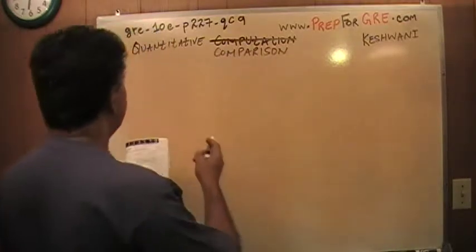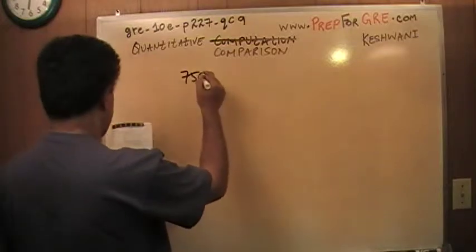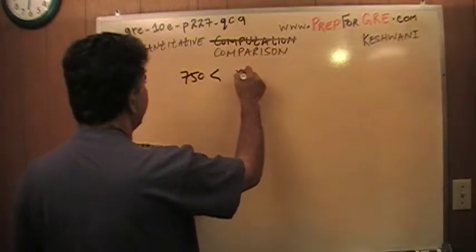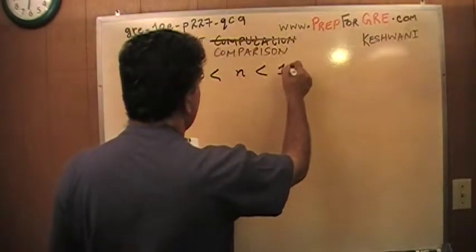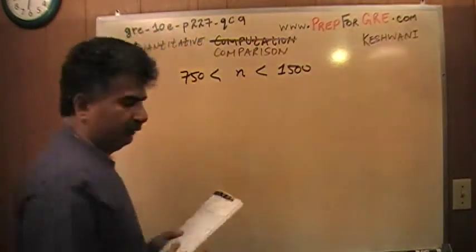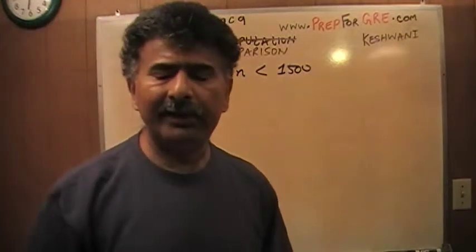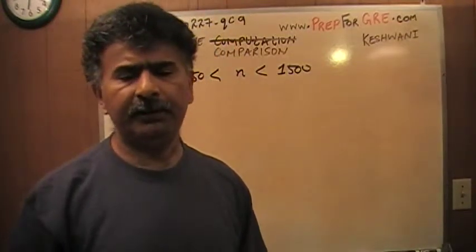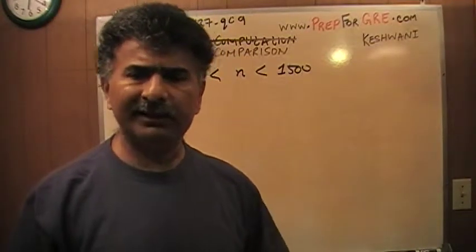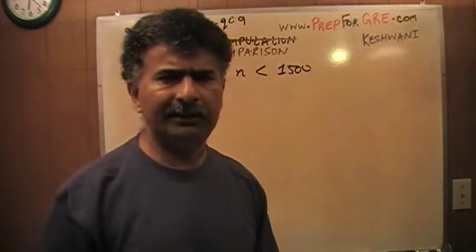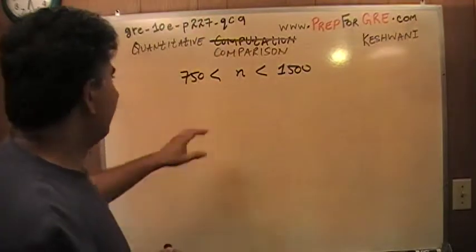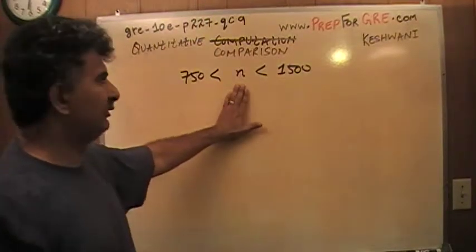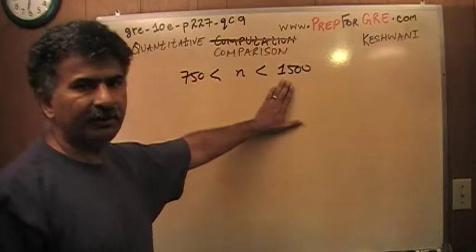We are told that this quantity N is somewhere between 750 and 1500. That's how one reads it. Read it on an intuitive level. Read it in a very simple English language. Don't read it like a geek, like a nerd, like a freak. Don't sit there and read 750 is less than N, which is less than 1500. No.